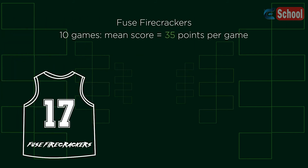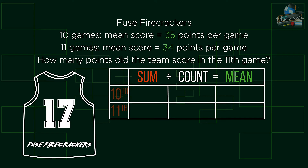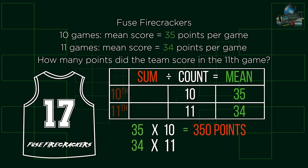Using this method, try this question. Putting the information into a table looks like this. Calculating the sum points requires us to work backwards, so we multiply the mean by the count. We can see from this that the Fuse Firecrackers scored 24 points in their eleventh game.